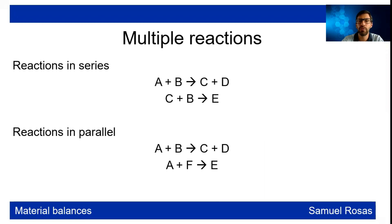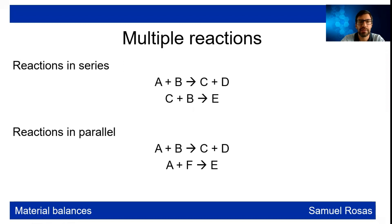First, we're going to talk about what a multiple reaction is. A reaction in series is one where you produce some product, and this product will react with another reactant. In parallel reactions, you have two reactions that occur, but one of the reactants can go one way or another.